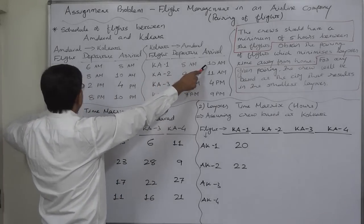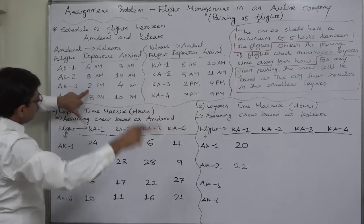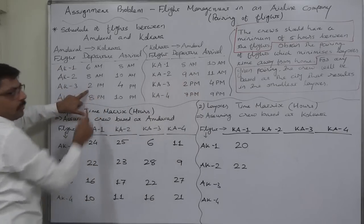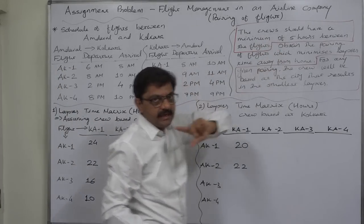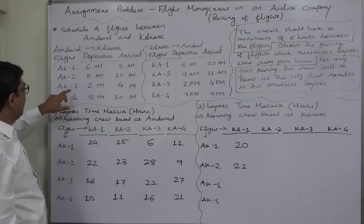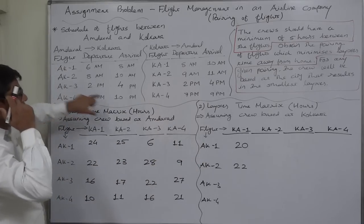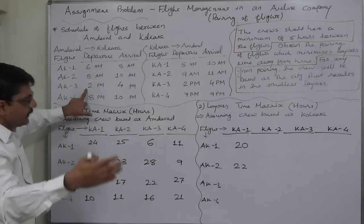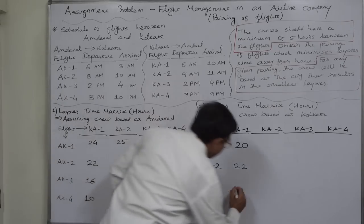If KA1 becomes AK3, it reaches Ahmedabad at 10 a.m. today and could start again for Kolkata from Ahmedabad at 2 p.m. today. But 10 a.m. to 2 p.m. is only 4 hours, which does not satisfy the minimum layover time condition of 5 hours. So it will become AK3 on the next day only — 10 a.m. today to 2 p.m. next day is 4 plus 24, giving 28 hours.